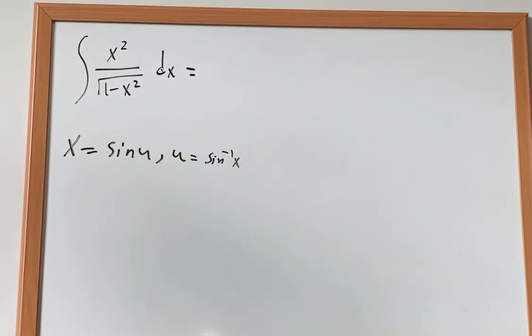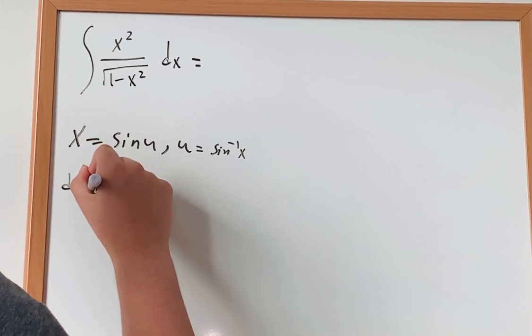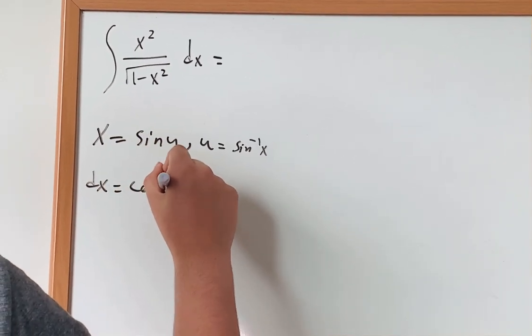And now, when I differentiate both sides, I get dx is just cosine of u du.